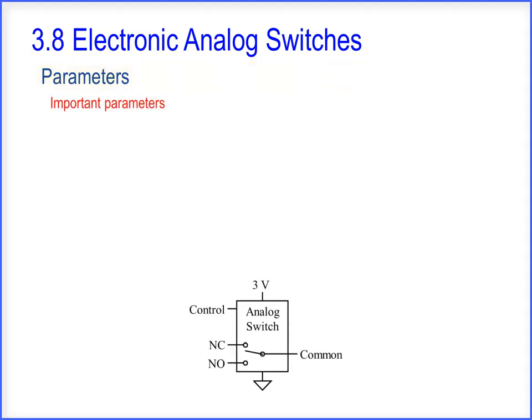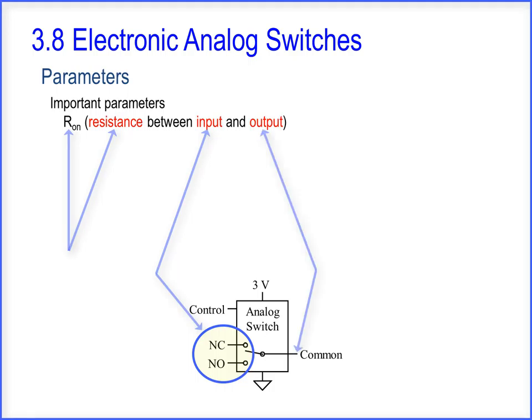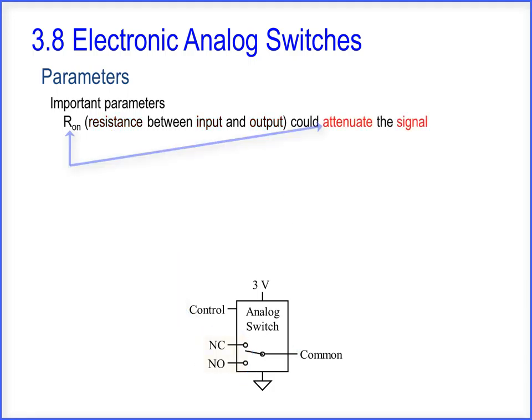Let's look at some analog switch parameters. Important parameters include RON, the resistance between the input and output. RON could attenuate the signal.